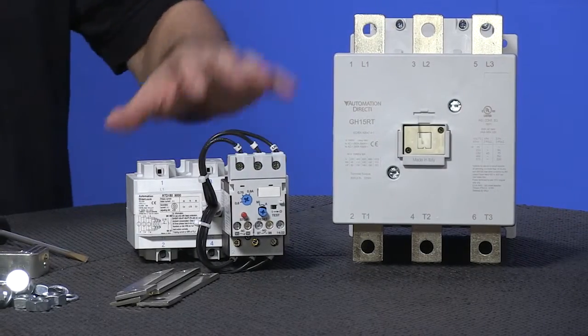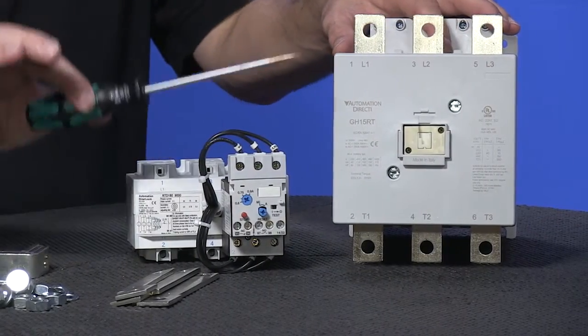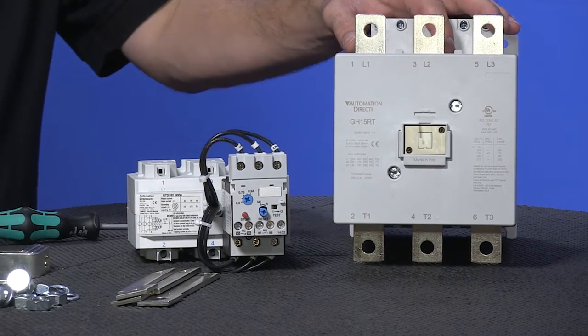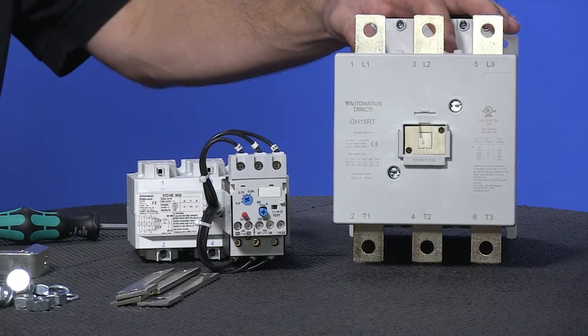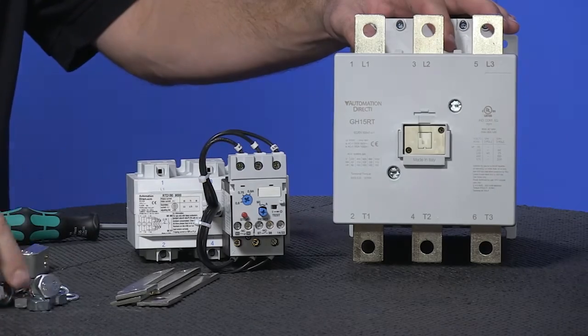In order to assemble the overload to the contactor, you are going to need a flat head screwdriver and a ratchet or wrench or both in order to tighten up the nuts and bolts.